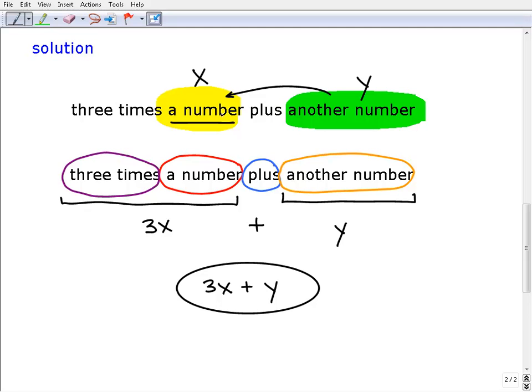So we have three times a number, so three times, it's going to focus in down here. So three times a number, now we've already decided our number is going to be x, so three times it is going to be 3x, right? So three times a number is going to be 3x plus, that's pretty easy, we just put a plus sign in it. Another number, and that would be y. So our variable phrase or algebraic expression will be 3x plus y.